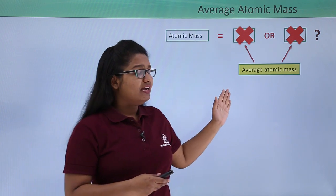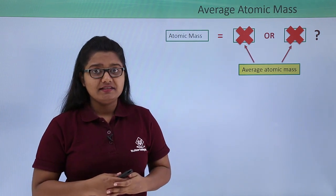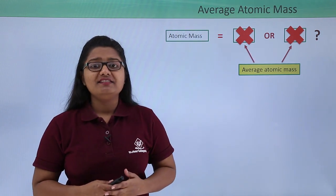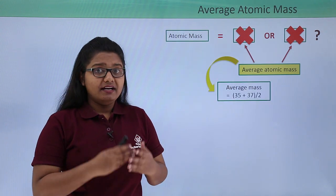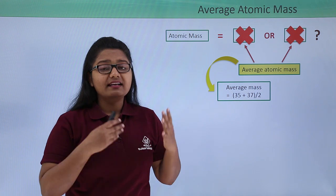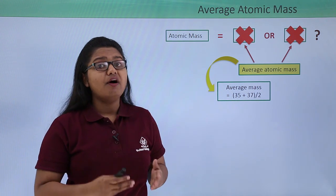Now how do we take the average of these two masses? Usually what we do is add the two numbers and divide it by two. But this method of finding an average percentage is totally wrong in this case.